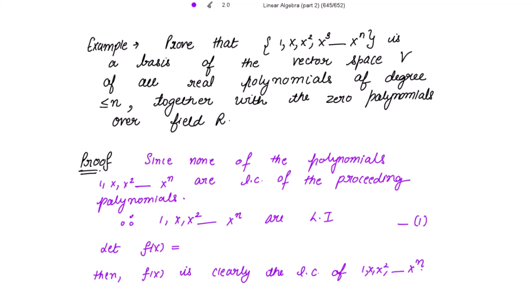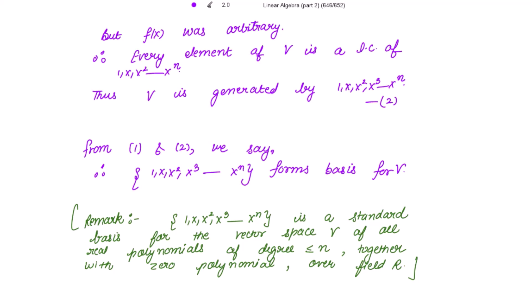Now we show these polynomials form the generators of V, meaning every element of V is a linear combination of these polynomials. Take an arbitrary polynomial f(x) = a₀ + a₁x + a₂x² + ... + aₙxⁿ belonging to V. Clearly f(x) is a linear combination of {1, x, x², ..., xⁿ}. Since f(x) was arbitrary, every element of V is a linear combination of these polynomials, so V is generated by them. Mark this as point 2. From 1 and 2, these polynomials form a basis for V.